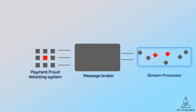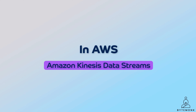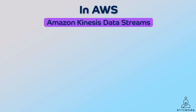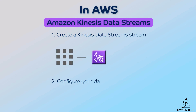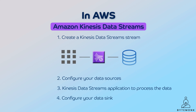There are a variety of ways to implement stream processing. If you are on AWS, one common approach is to use Amazon Kinesis Data Streams — a fully managed service that makes it easy to ingest, process, and collect streams of data at any scale. To implement a stream processing application, you create a Kinesis Data Stream, configure your data sources to write data to it, create a Kinesis Data Streams application to process the data, and configure your data sinks to receive the processed data from the Kinesis Data Streams application.